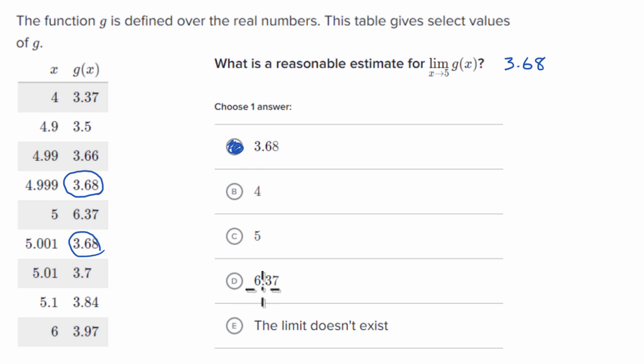And this is probably the most tempting distractor here, because if you were to just substitute five, what is g of five? It tells us 6.37, but the limit does not have to be what the actual function equals at that point. Now, let me draw what this might look like.